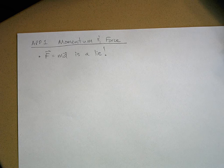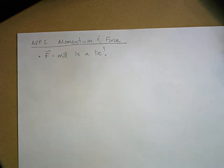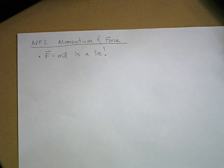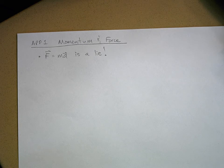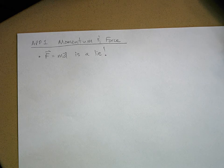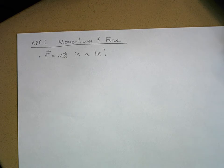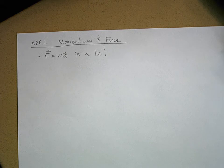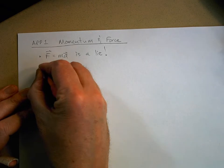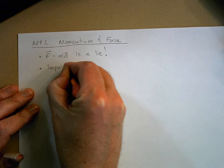I've got a confession to make - I've been lying to you for months. F=ma is a lie. Well, it's not a lie, it's just not complete. It's not what we call Newton's second law - that's not what Newton said when he wrote his second law. We're going to show what's going on, and in the process we will define what we call the impulse-momentum theorem.